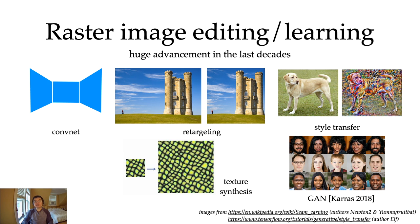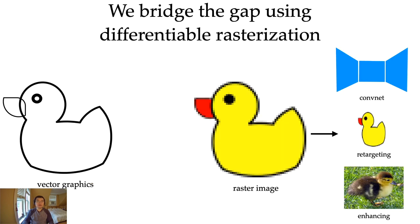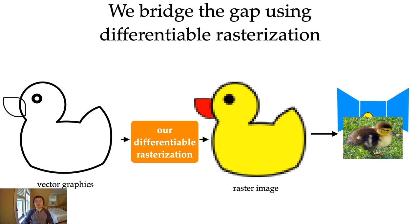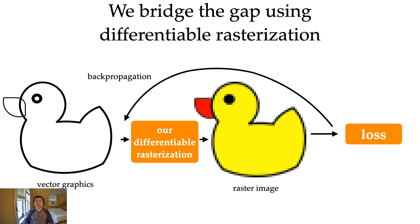On the other hand, raster image processing and learning has advanced a lot in the last decades. In addition to more traditional computational photography methods like retargeting or texture synthesis, we can now learn very complex structure from raster images using convolutional neural networks. Our goal is to bridge the gap between vector and raster graphics by connecting them using a differentiable vector graphics rasterizer. Once we have our differentiable rasterizer, we can unify editing and learning of vector graphics, propagating the editing and learning of raster images back to vector graphics using gradient descent update.